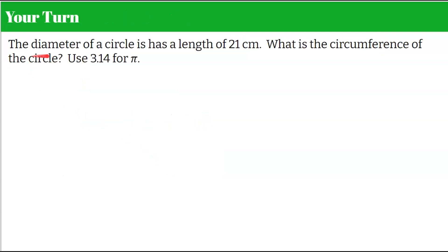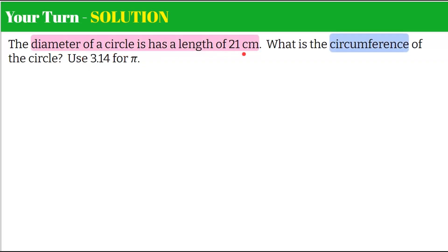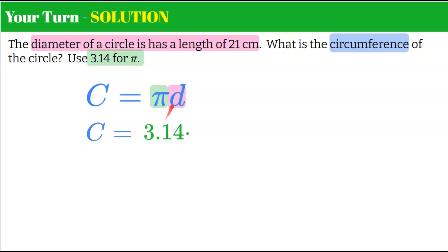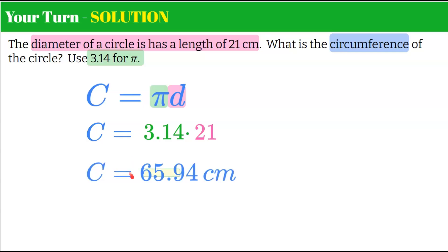Your turn: the diameter of a circle has a length of 21 centimeters. Find the circumference using 3.14 for pi. Using C equals pi times diameter, replace pi with 3.14 and diameter with 21. The product of 3.14 multiplied by 21 is 65.94 centimeters.